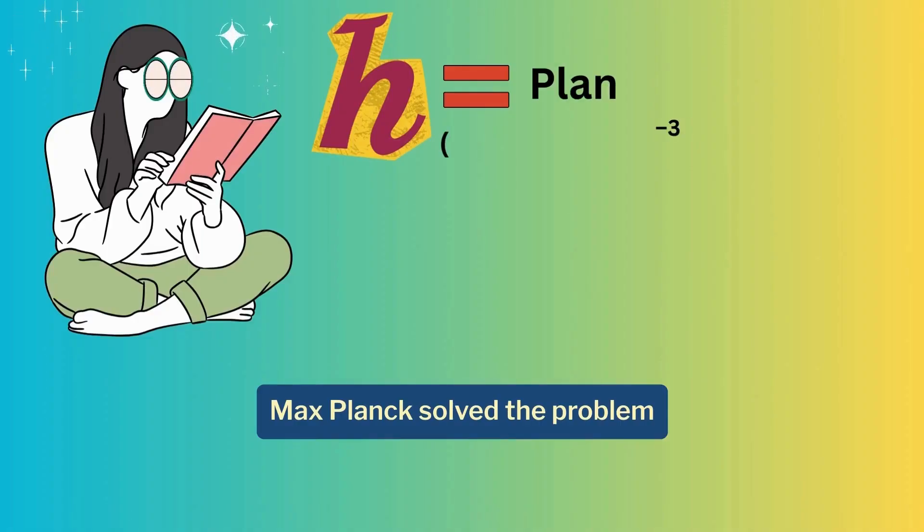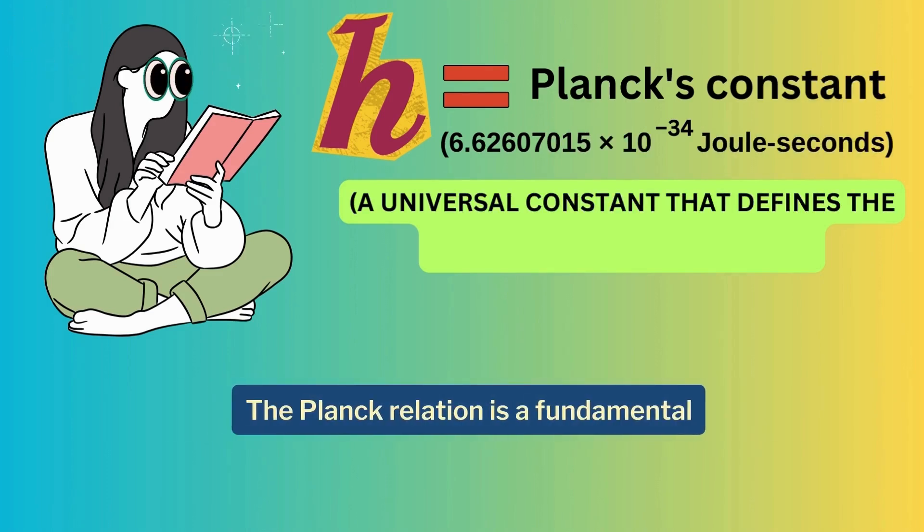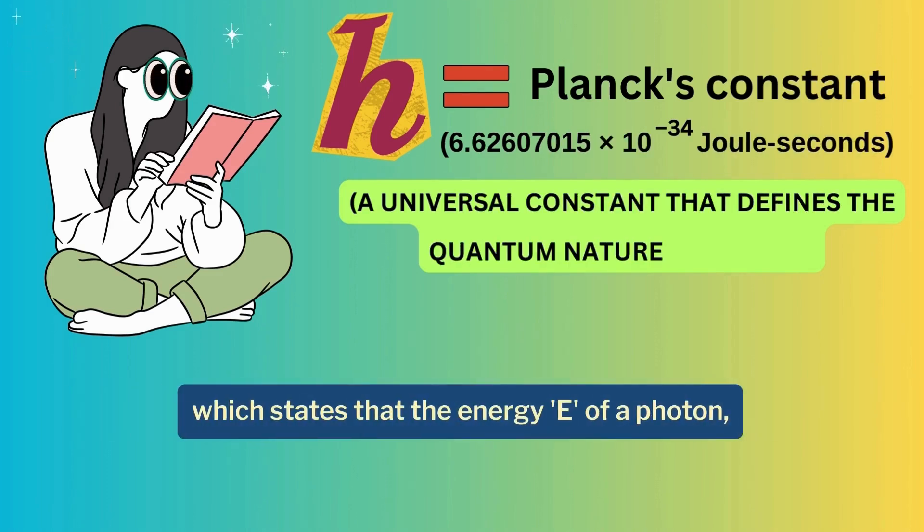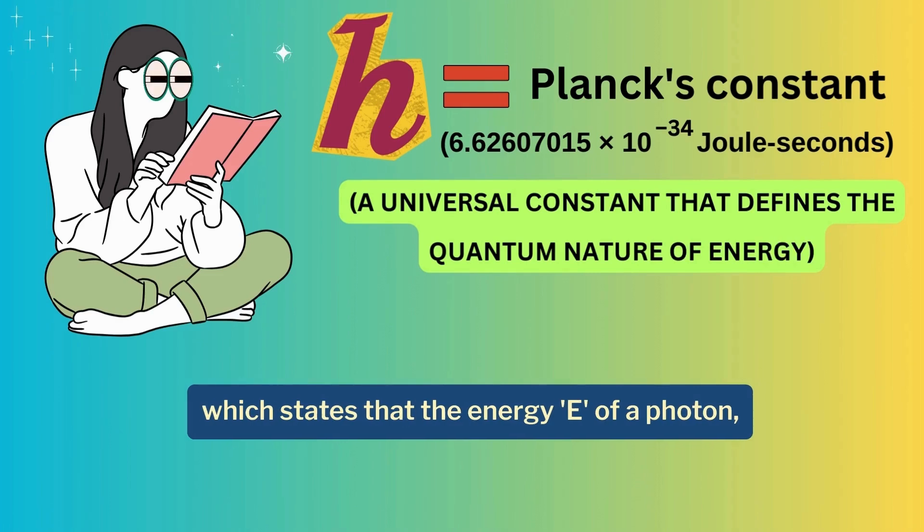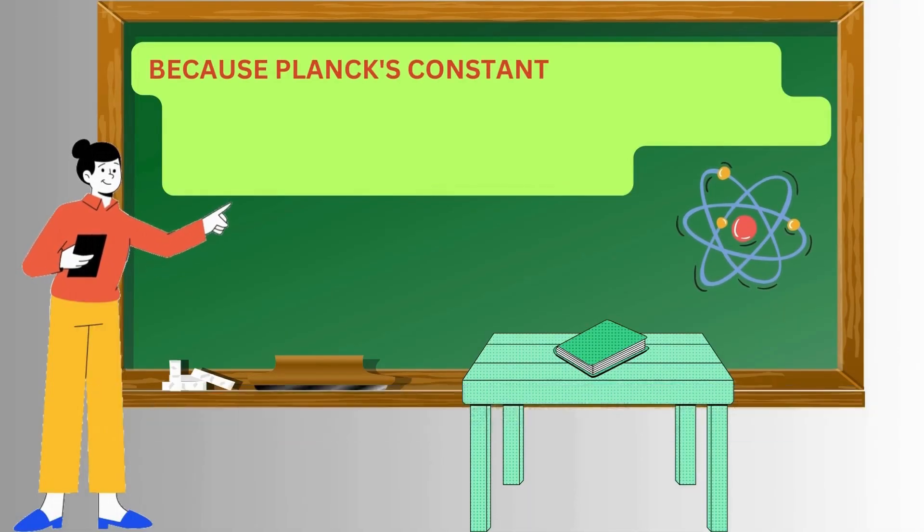Max Planck solved the problem with the discovery of Planck's equation. The Planck relation is a fundamental equation in quantum mechanics which states that the energy E of a photon, known as photon energy, is proportional to its frequency f.